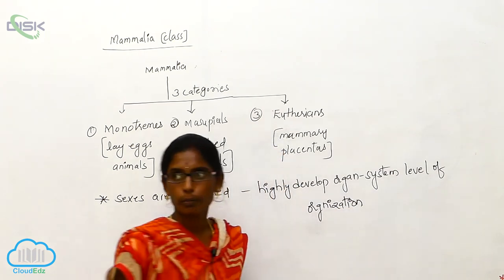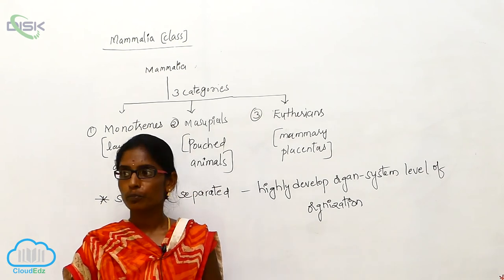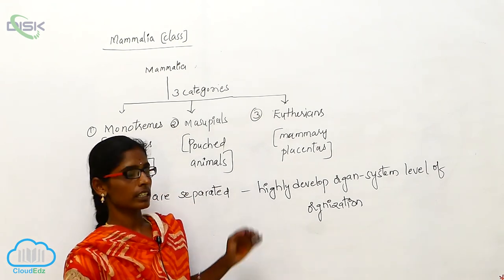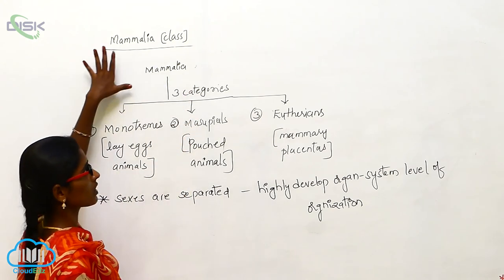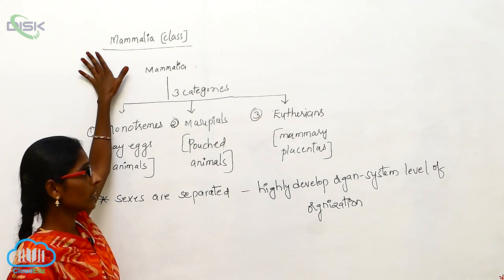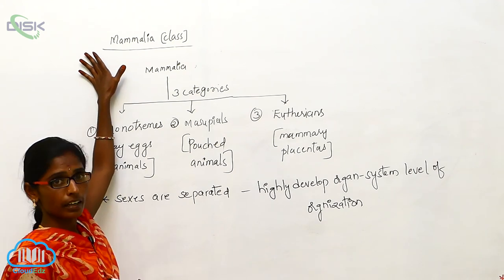The brain is covered by the brainbox and skull, which is dicondylic type. The body is divided into head, neck, trunk, and tail.